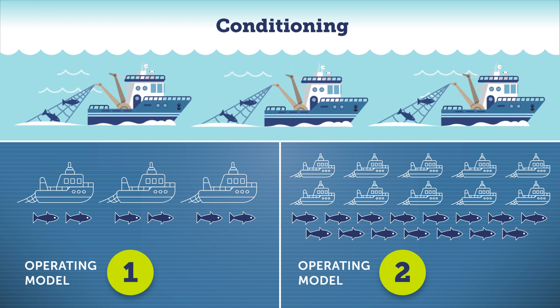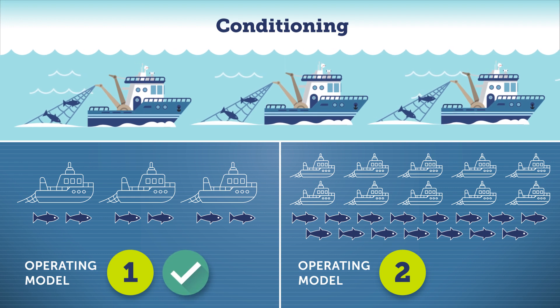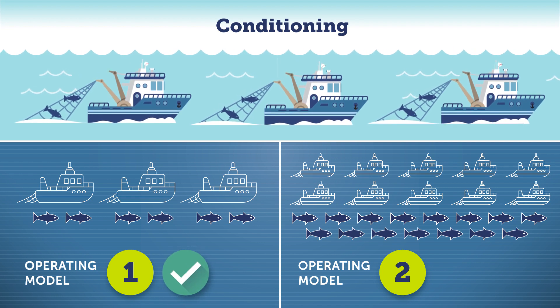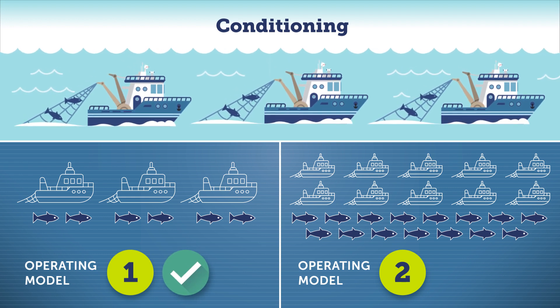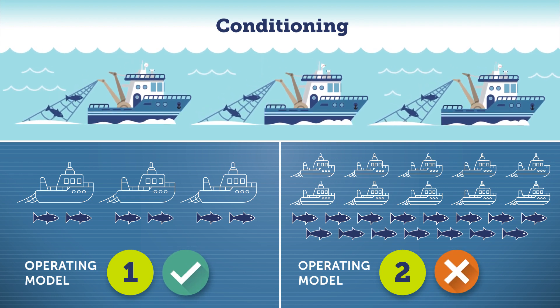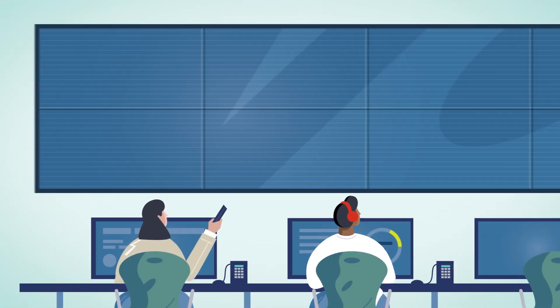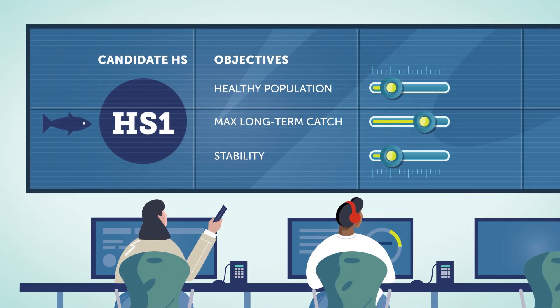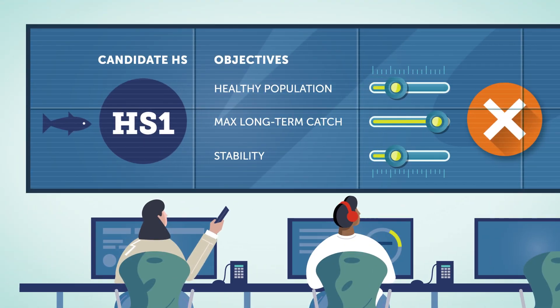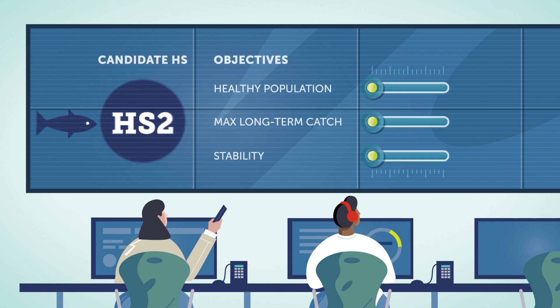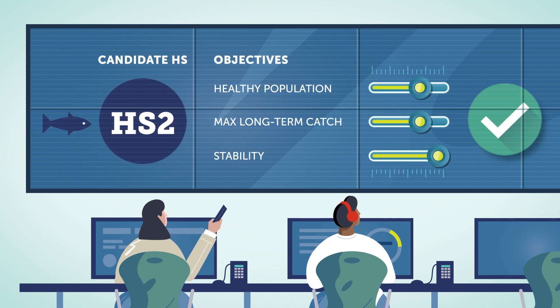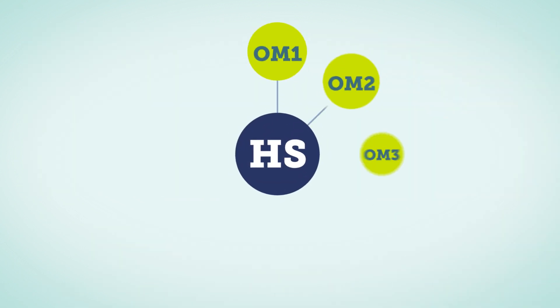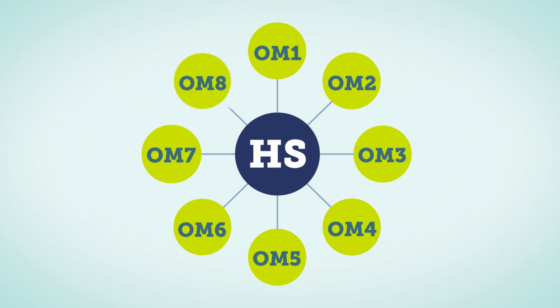such as catch-per-unit effort data, and determines whether the two fit or are compatible. Once operating models are agreed, scientists can test the likelihood that various candidate harvest strategies will achieve the objectives.